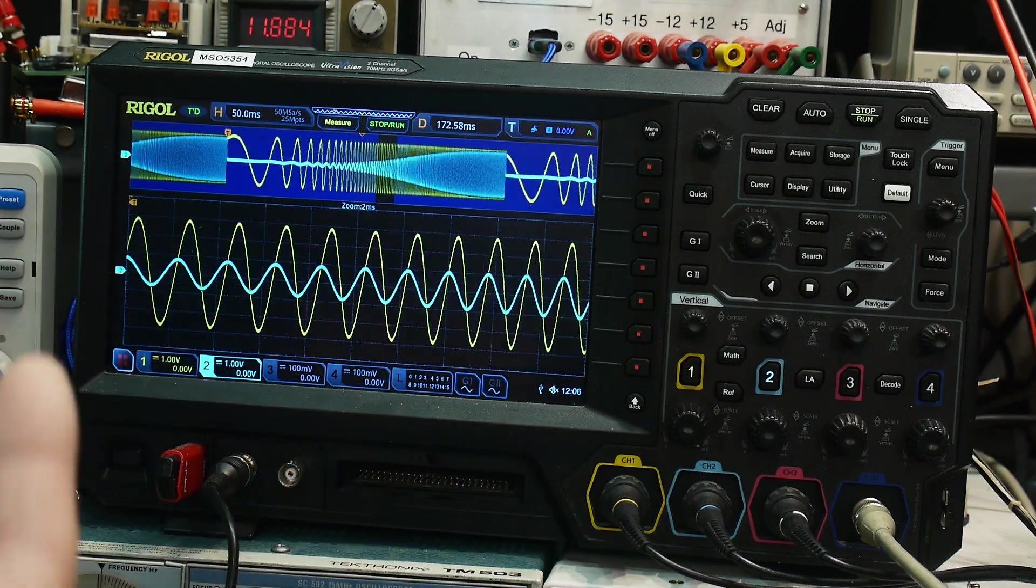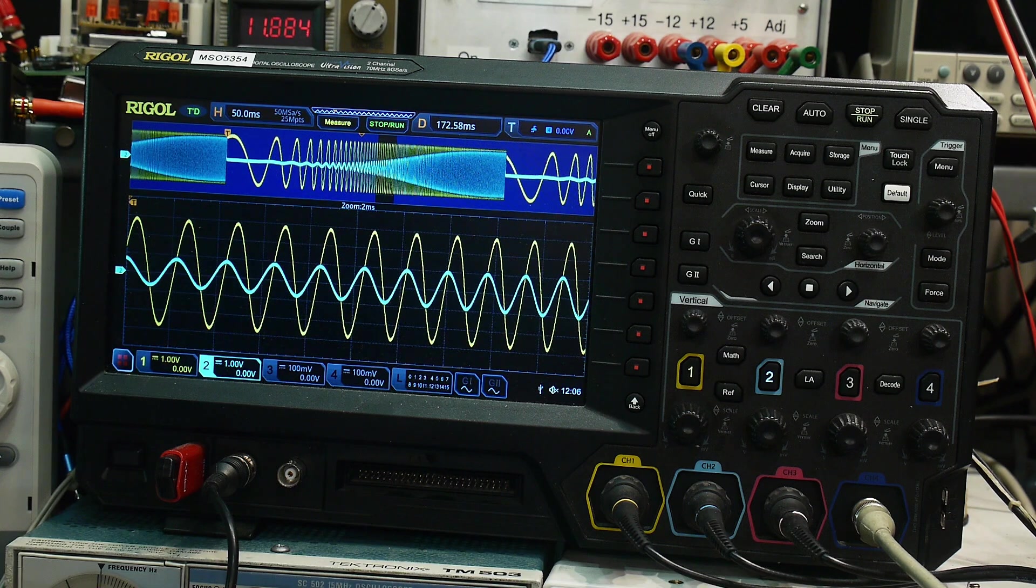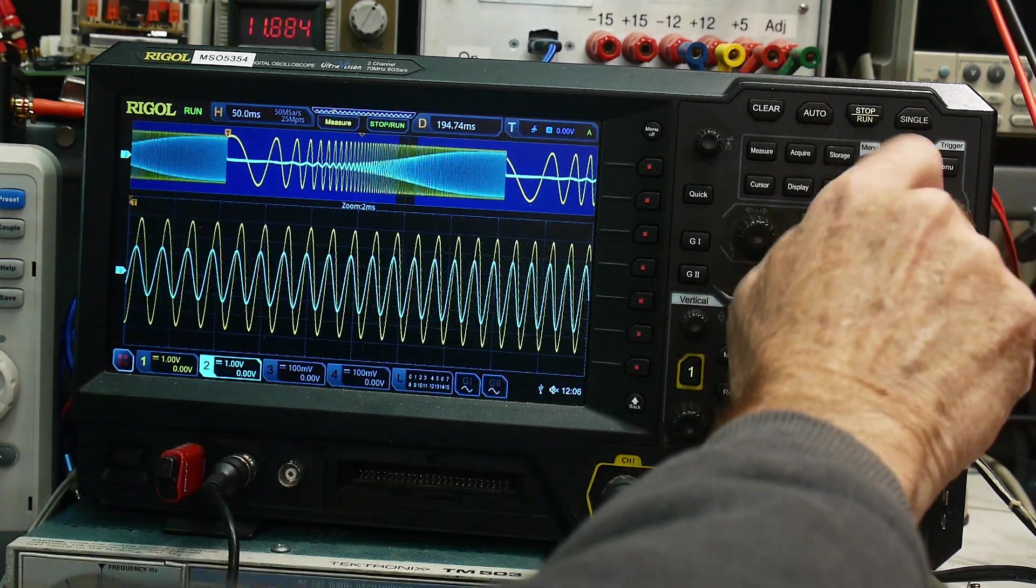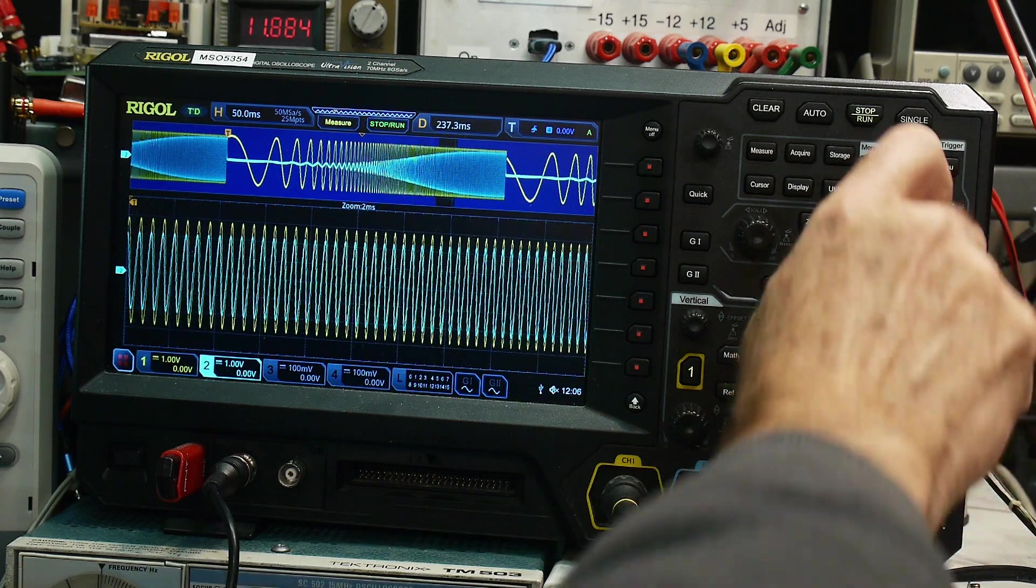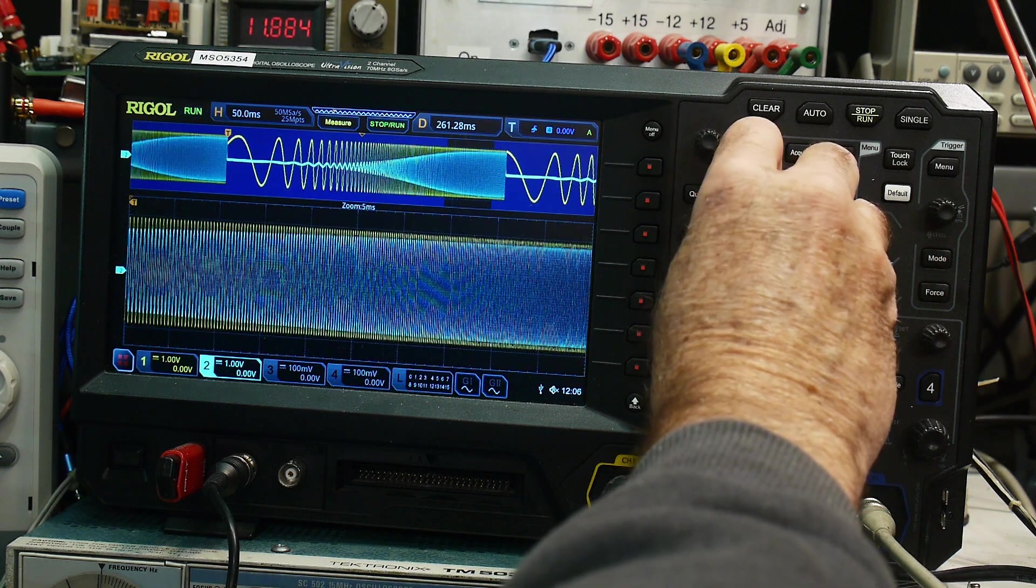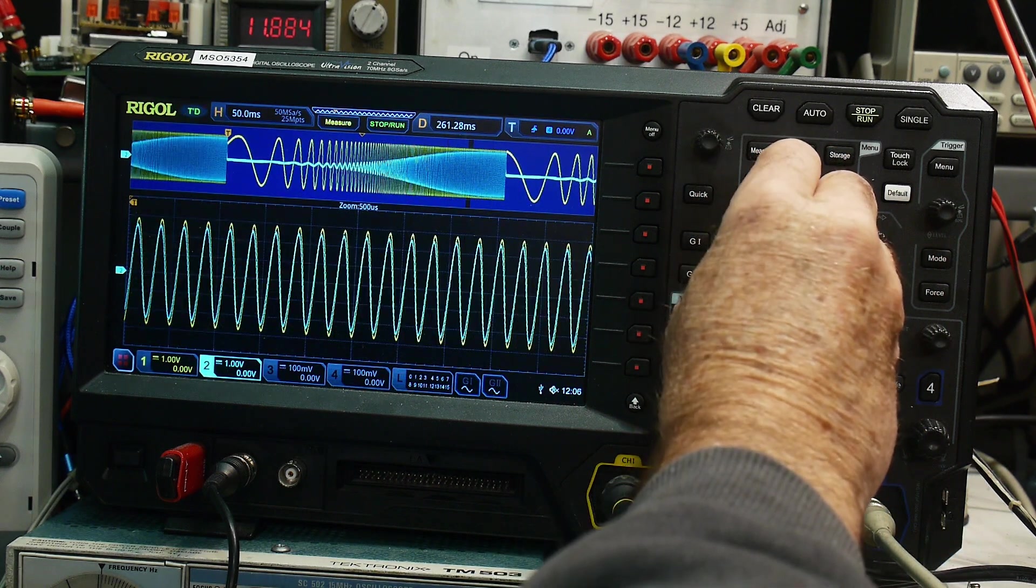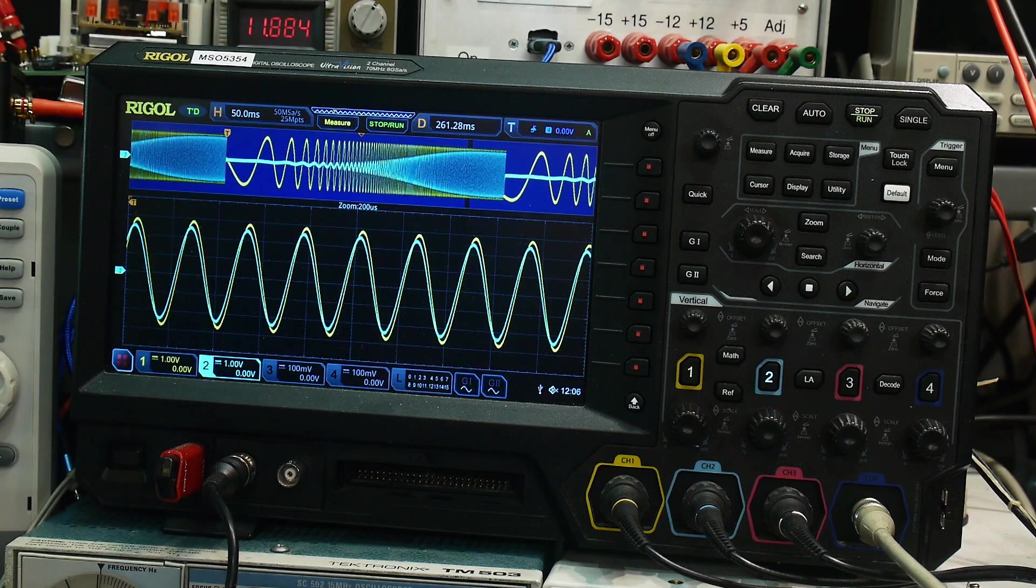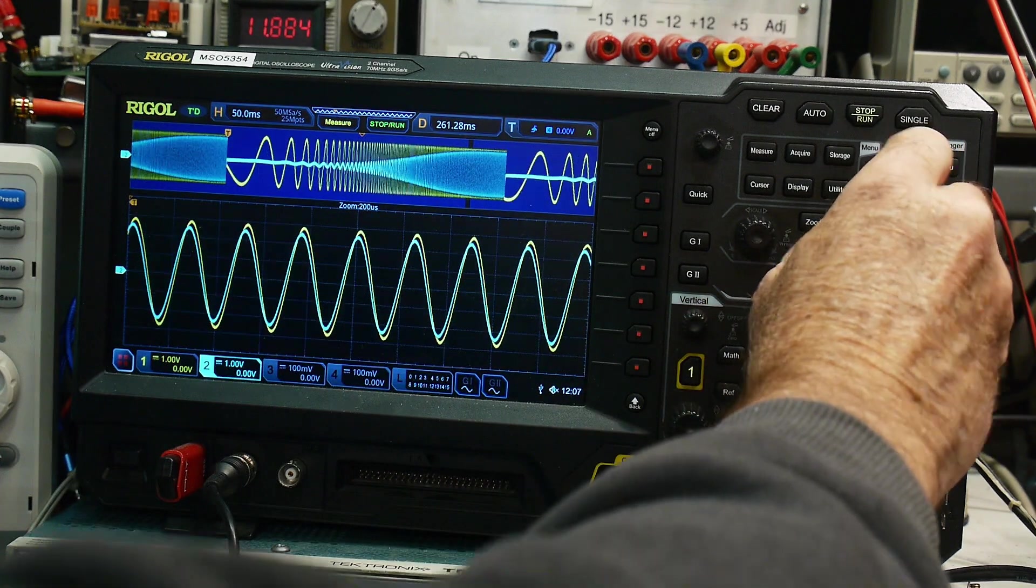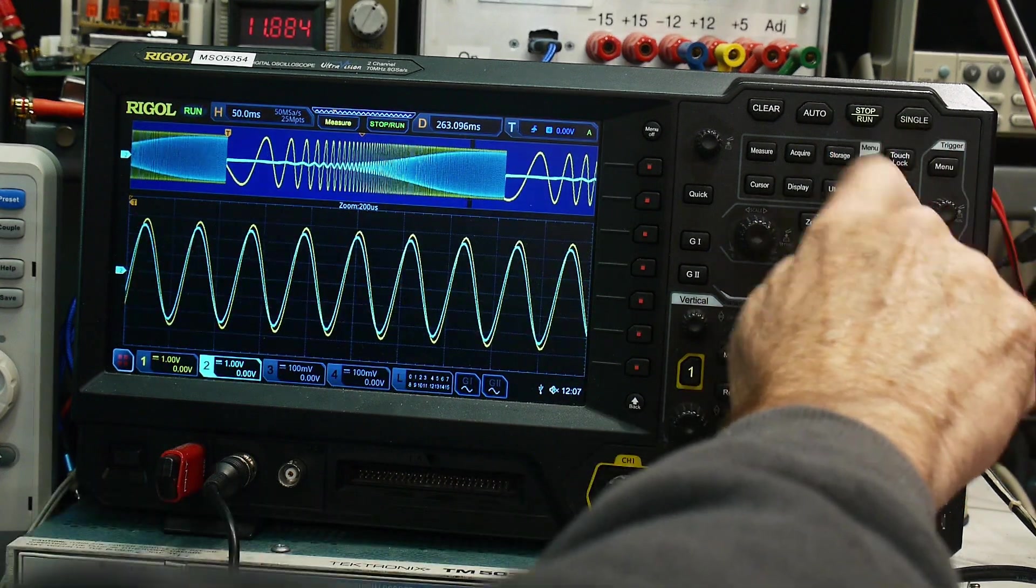But if we go out here where we have basically a hundred percent transmission, we'll go way out here to the end. And you can see, we'll get a zoom in a little bit here so you can see it better. You can see that our phase shift is getting smaller and smaller and smaller until we finally reach perfectly in phase at the very, very end.